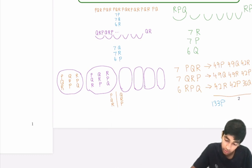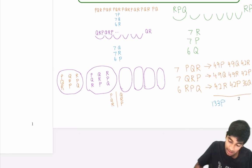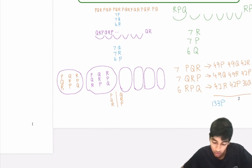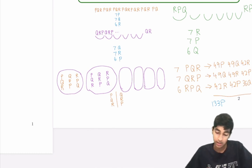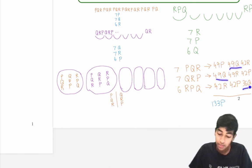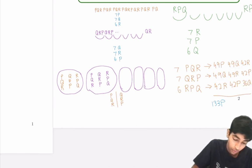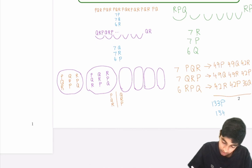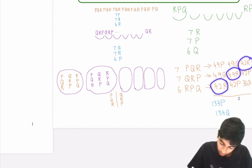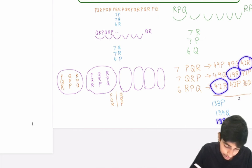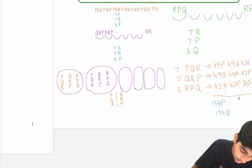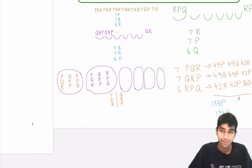Now we add everything up. For P: 49 + 42 + 42 = 133 P. For Q: 49 + 49 + 36 = 134 Q. For R: 42 + 49 + 42 = 133 R. So the answer is 133, 134, 133. Looking at the answer choices, that is option C — the correct answer for this problem. Hope you enjoyed and found this video useful.